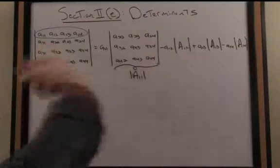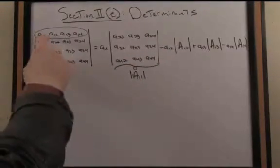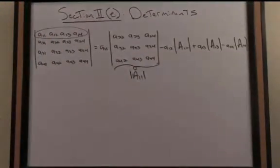I continue along row 1 alternating signs. So there's a minus here, minus A12, times the determinant of its corresponding submatrix, and so forth.